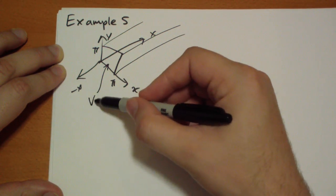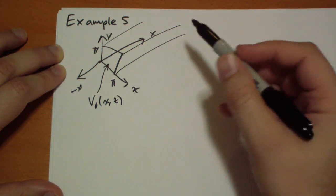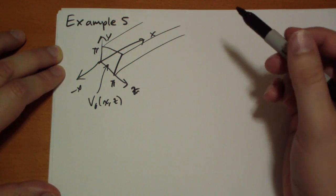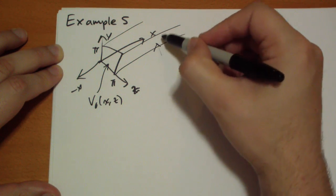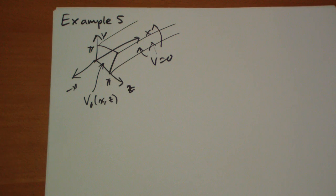Now this is v-naught of some z. This is a z, not an x. And these, down there on the bottom, are all v equals zero. Those are all grounded.